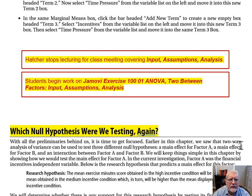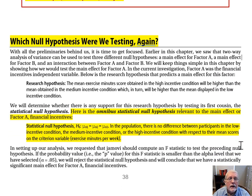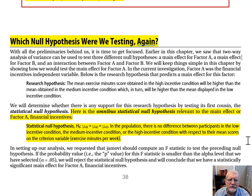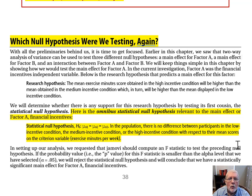Halfway down page 38, let's refresh our memory on what we're doing and why we're doing it. Which null hypothesis were we testing? Here's the omnibus statistical null hypothesis relevant to the main effect for Factor A, financial incentives. It says: in the population, there's no difference between participants in the low incentive condition, the medium incentive condition, and the high incentive condition, with respect to their mean scores on the criterion variable, exercise minutes per week.